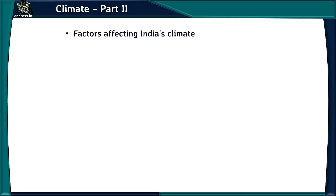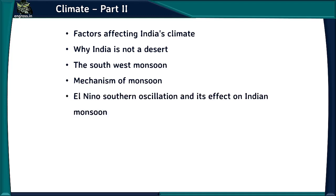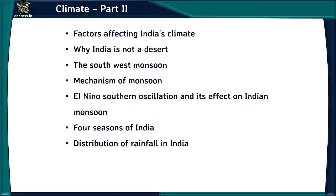Hello everyone. In the second part of the lesson on climate, we will learn factors affecting India's climate, why India is not a desert, the southwest monsoon, all the mechanisms of monsoon, El Niño Southern Oscillation and its effect on India's monsoon, four seasons of India, distribution of rainfall in India, and finally monsoon as a unifying bond.